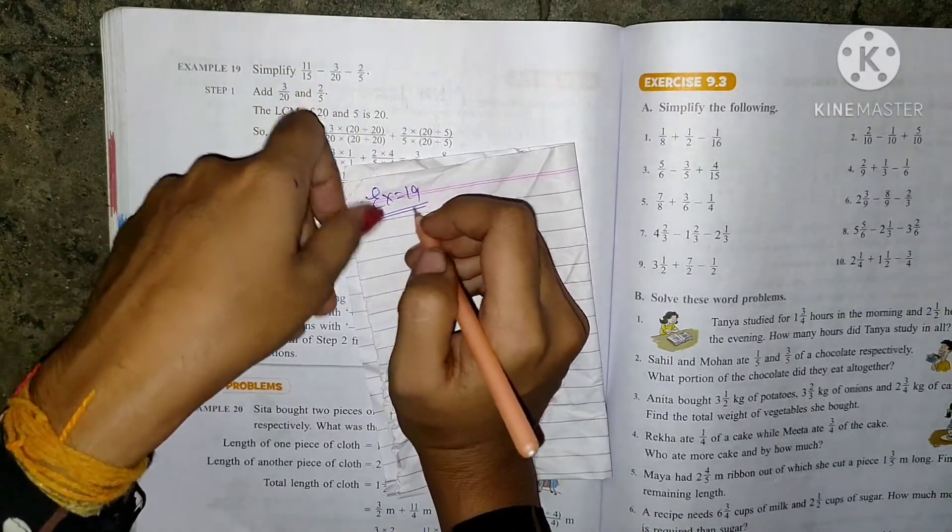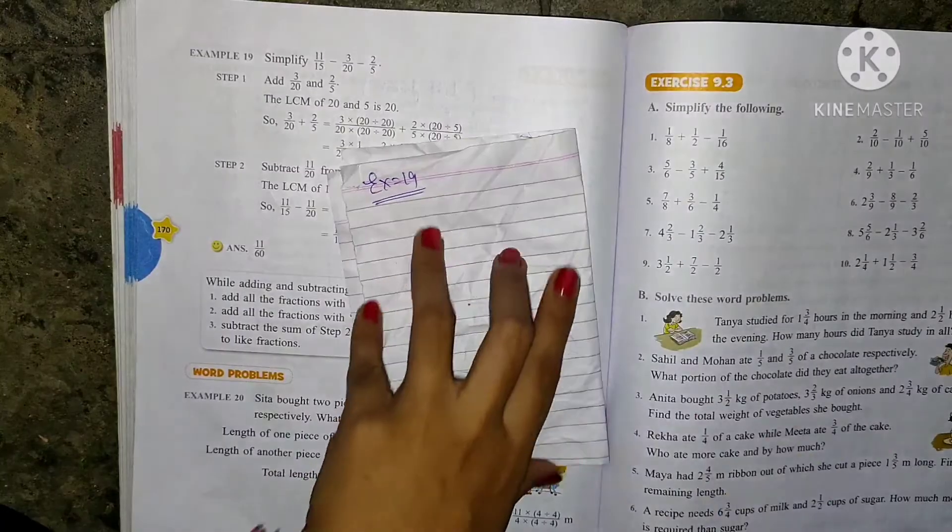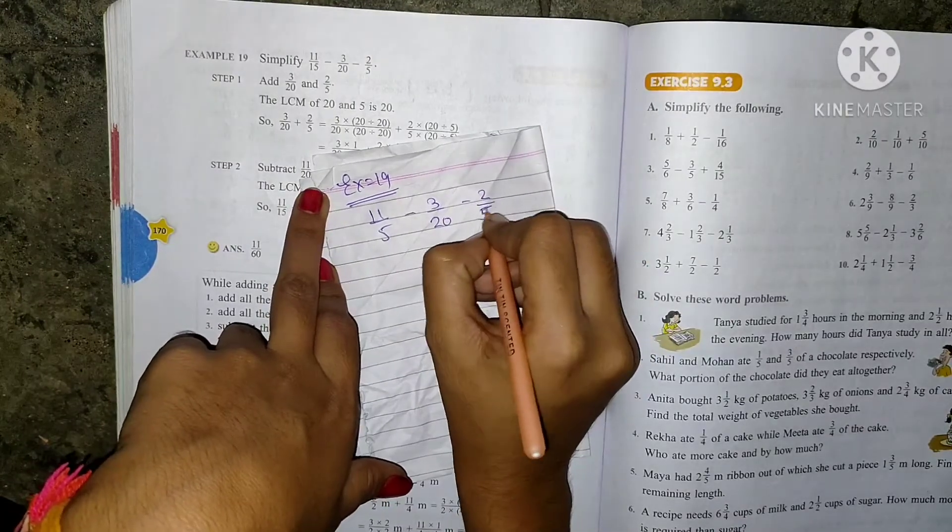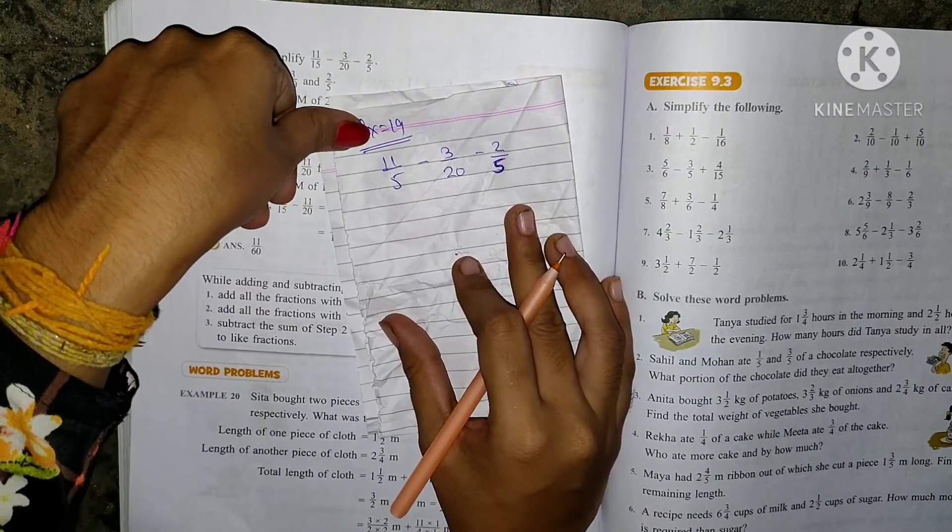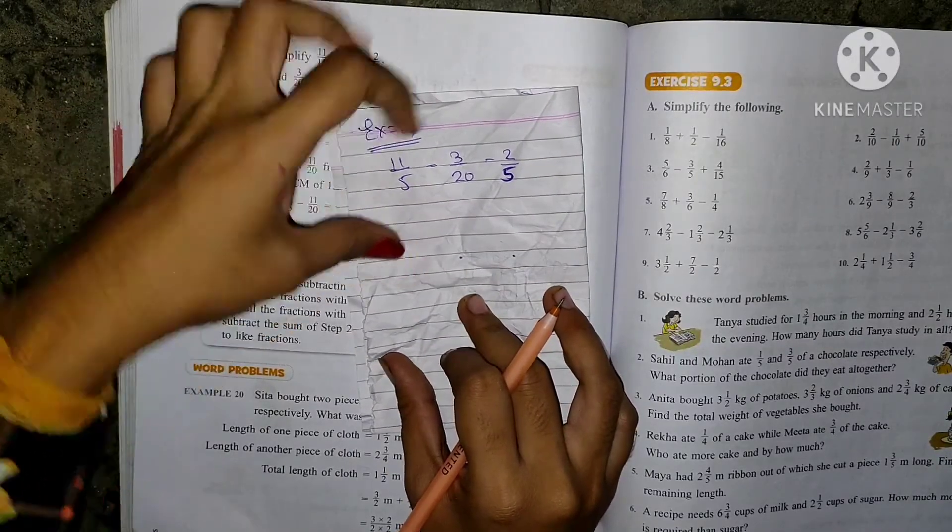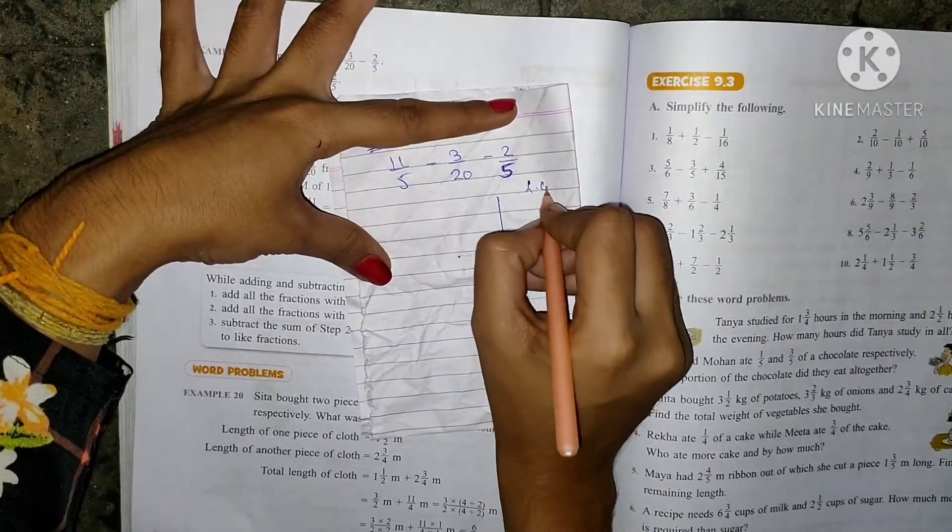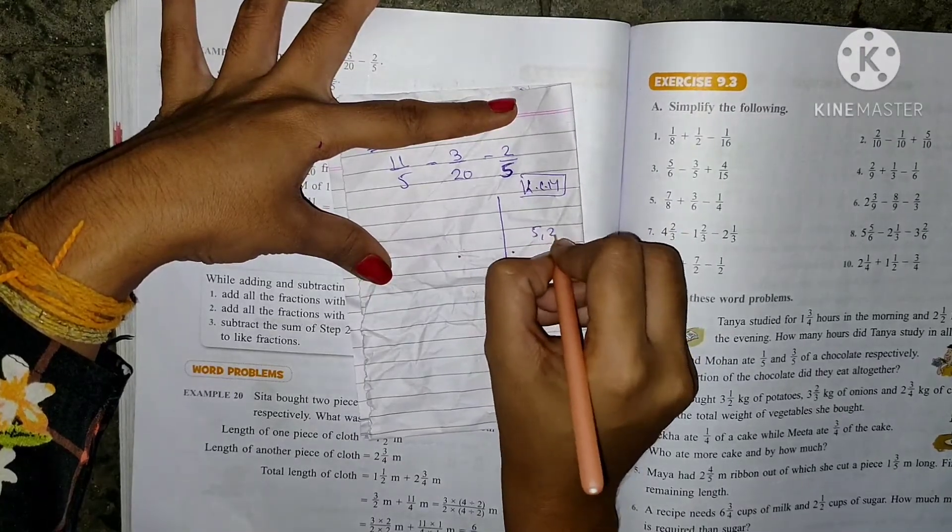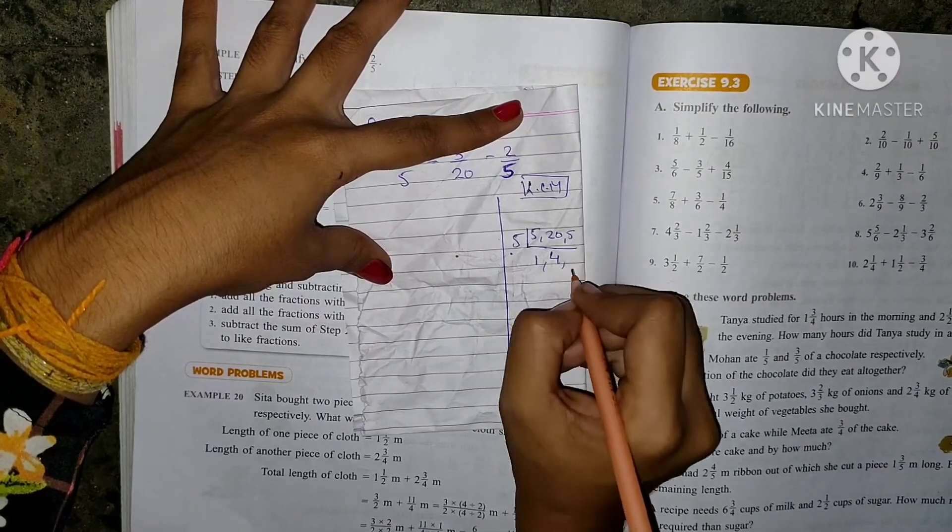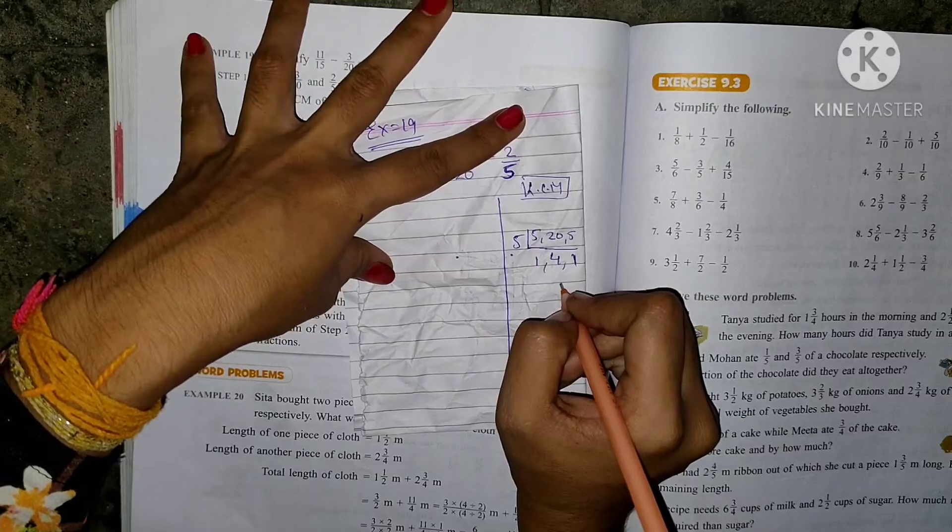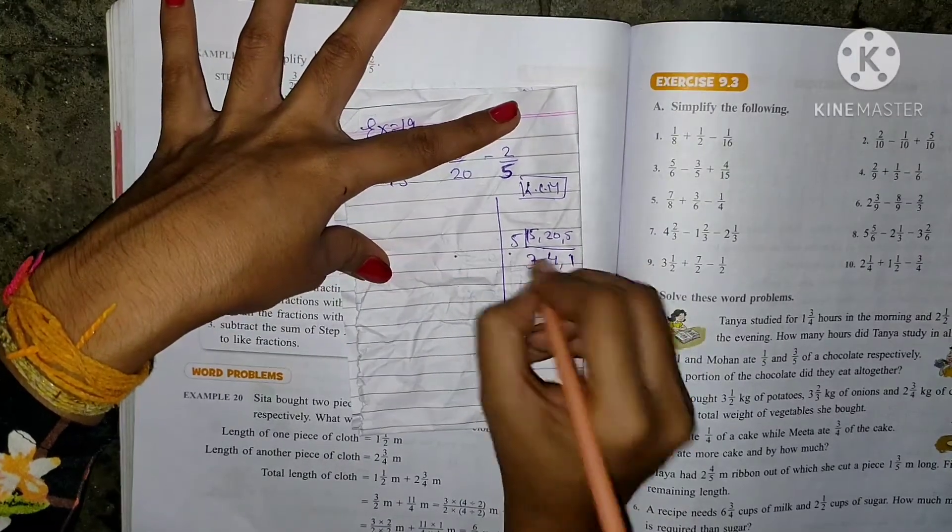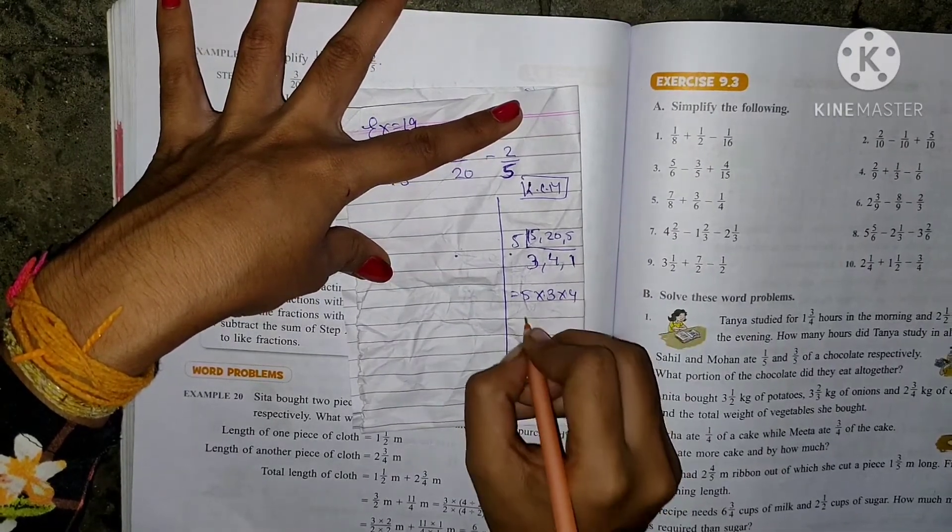Example 19. Okay, see here. Now see this one. In the example, we have 11 by 5 minus 3 by 20 minus 2 by 5. Students, I commented in the last lecture that the first sign can use the addition, but in this all values, we see subtraction. So students, what will we do? First, we will do LCM. Okay, now 5, 20, and 5 - we will find the LCM of these three. So 5 times 1 is 5 in the table. 20 comes 4 times, and 5 comes 1 time. Yes students, sorry, the first number is 15. 15. So 5's table, 15 comes 3 times. So your value will be 5 into 3 into 4. 5 threes are 15, and 15 fours are how much students? 60. How much? 60.